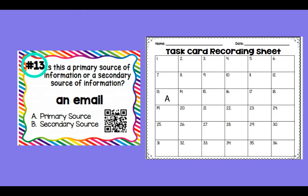Here's what you're going to do: look at each task card, find the number, and then put the letter answer in the task card recording sheet. Number 13 was the one we looked at yesterday — it's an email, primary or secondary source. We decided it was a primary source because it was written at that time. So I'm going to put A in section 13.